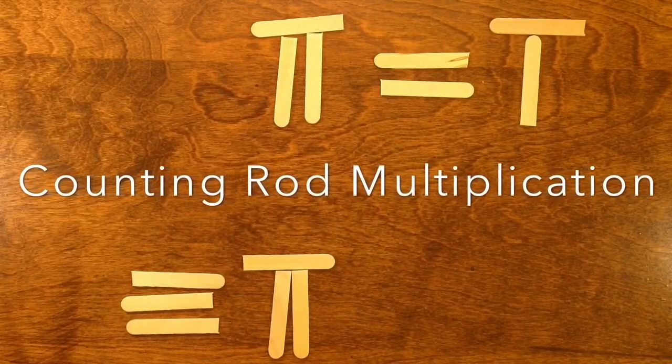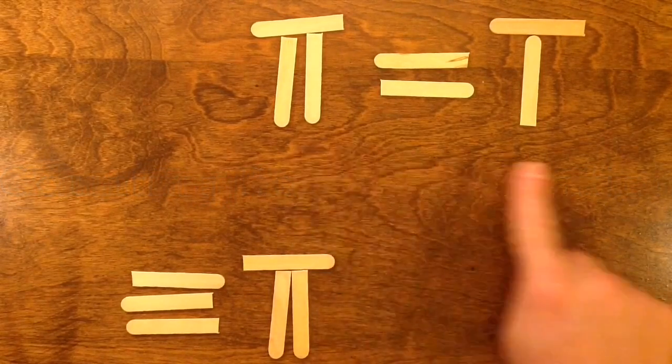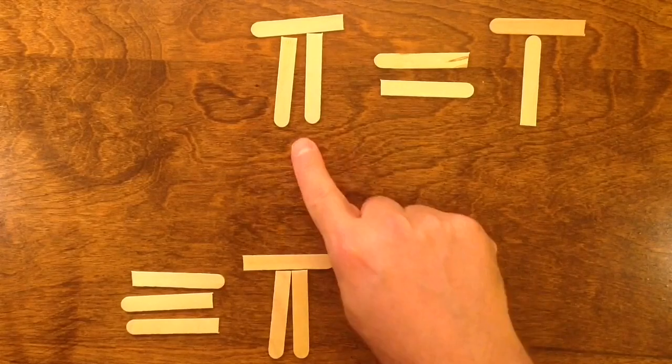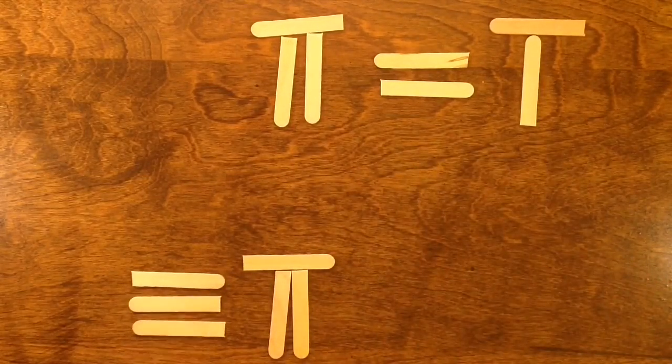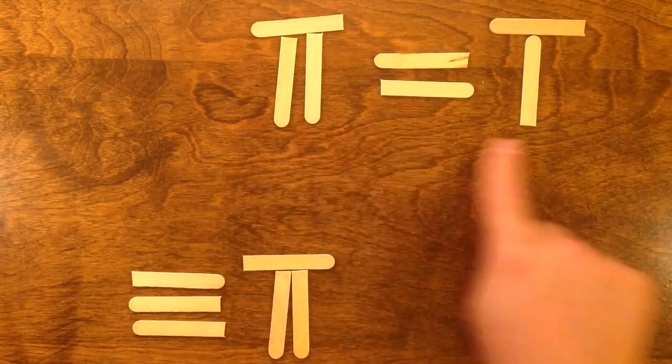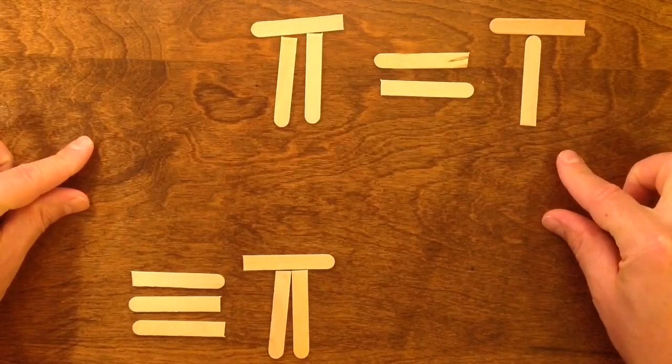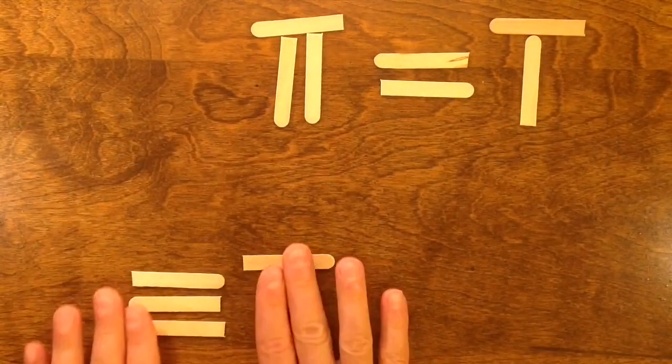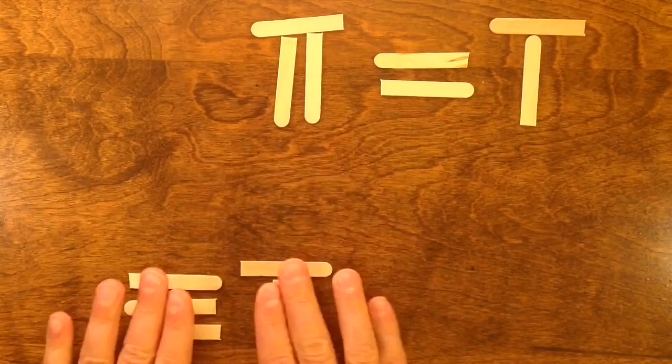Let's take a look at a multiplication problem for counting rods. We would line up the two numbers that I want to multiply, so this is 726 times 37. We line up the two numbers with a little bit of a space in between, that's actually where our answer is going to go. And the lower number, the ones place of the lower number is under the highest place of the upper number.